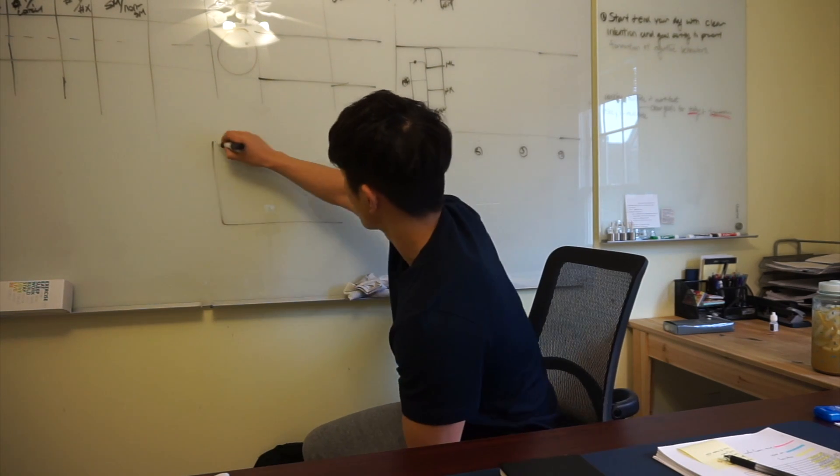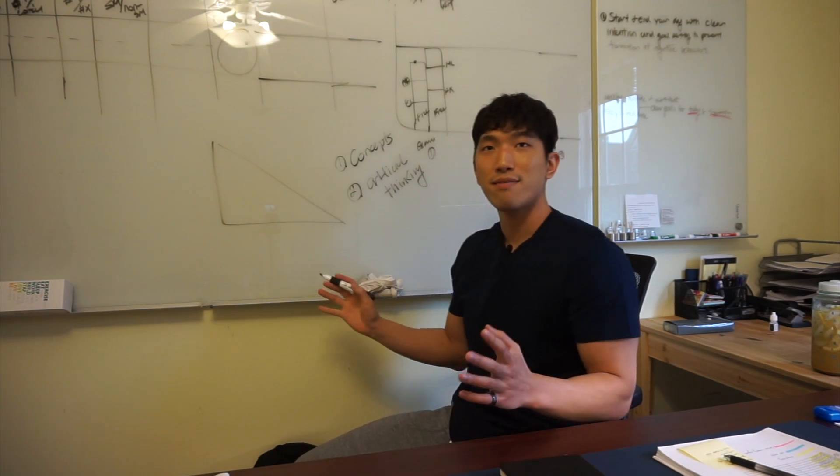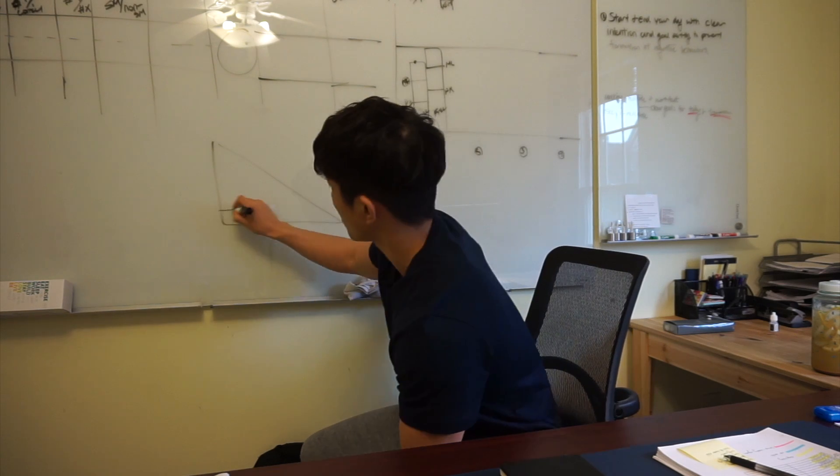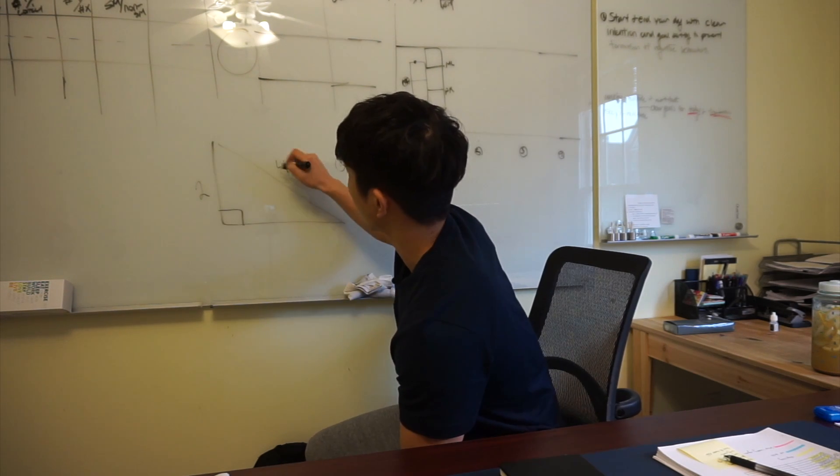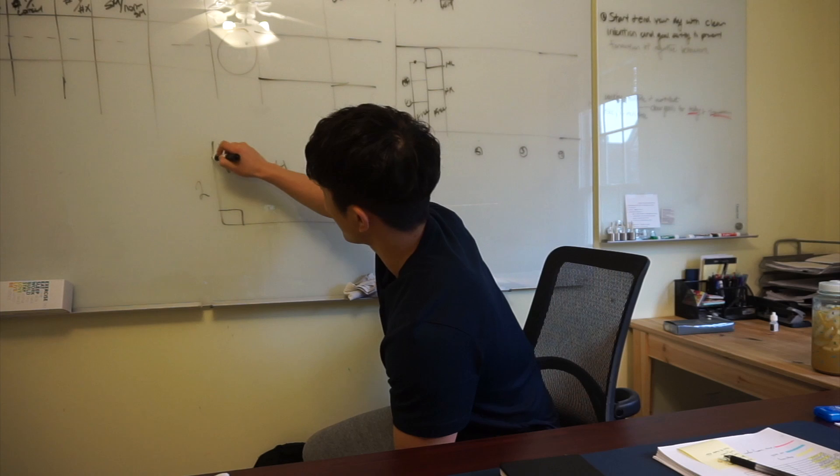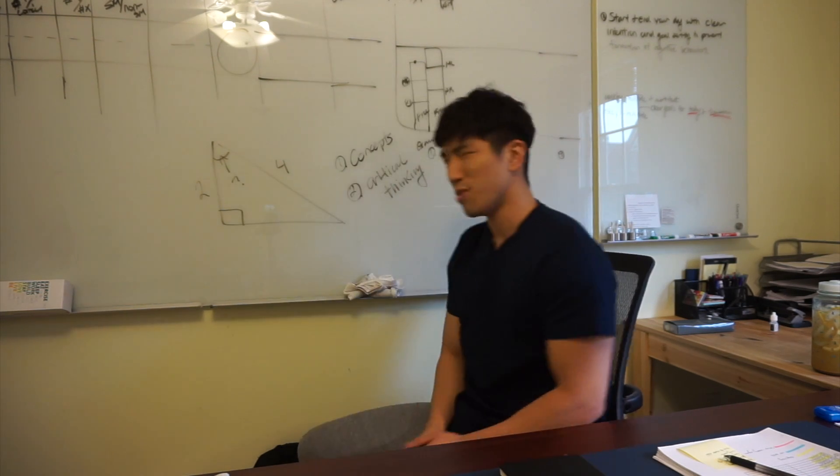Let's say if there's a right triangle right here, and let's say their side length is 2, 4, and the question is asking you to find out what this angle is right there.